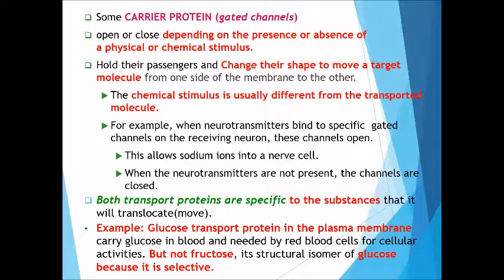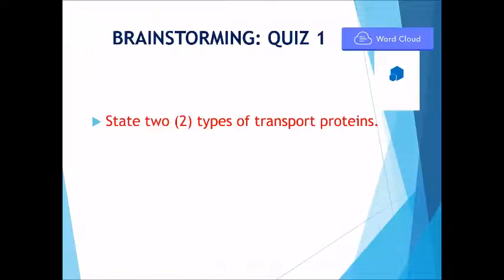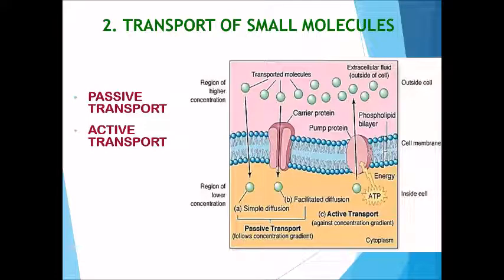Both transport proteins are specific to the substance they translocate. For example, the glucose transport protein can only carry glucose; if fructose tries to pass through the glucose transport protein it cannot, because the transport must be selective. Now you have to answer the first question: state the two types of transport protein.